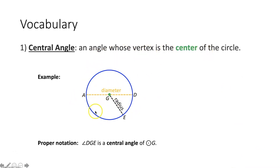So if we're looking at our example down here, we have an angle DGE, where point G, the vertex of our angle, is the center of the circle. Because of that, this angle right here would be considered a central angle of circle G.